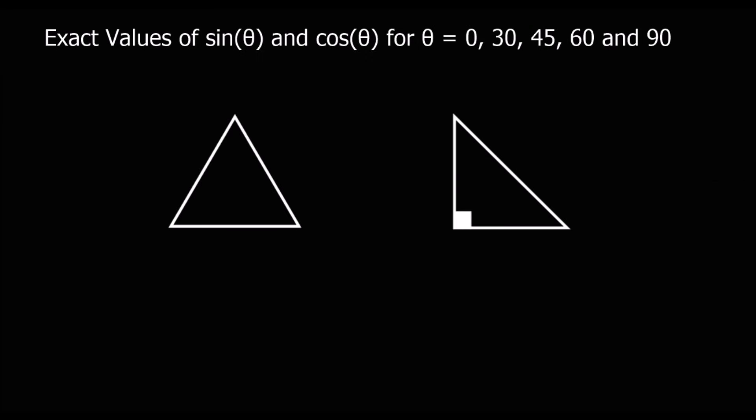So what we're going to do is we're going to look at these two triangles. Here I've got an equilateral triangle, so each side's the same, so each side's 2. And here I've got a right angle triangle, a right angle isosceles triangle, so these two lengths are equal and they're both 1.